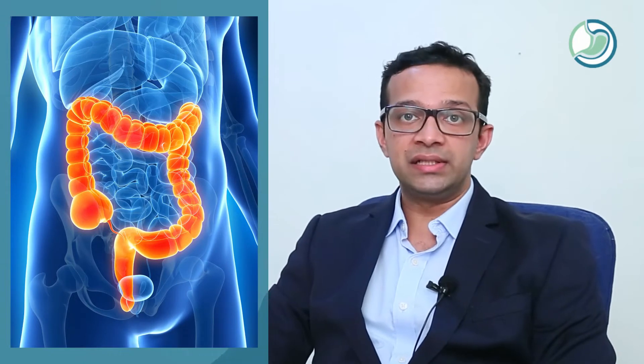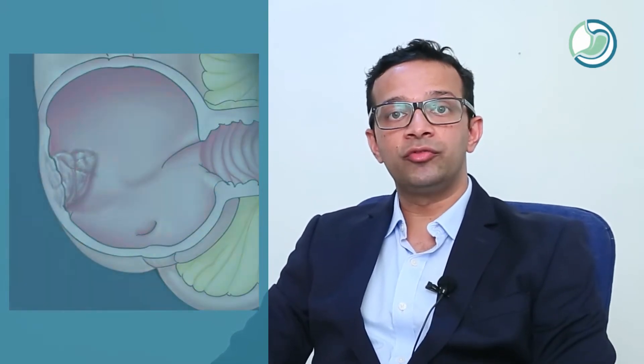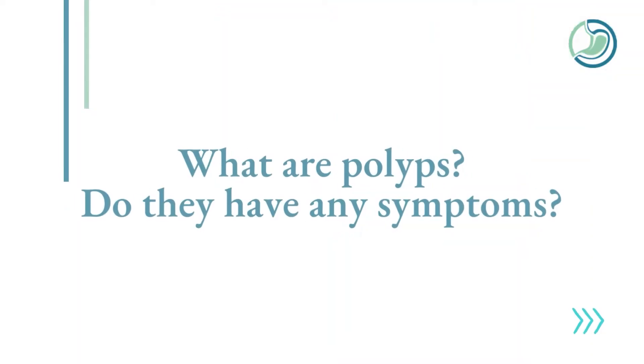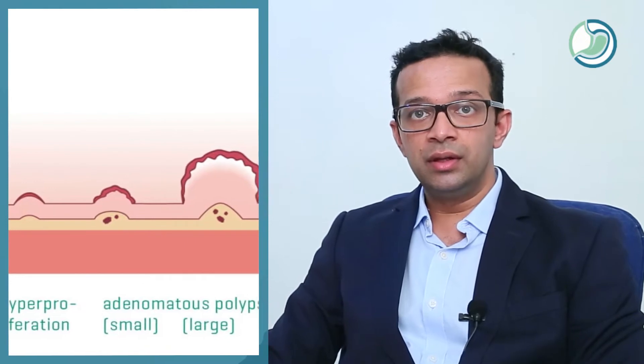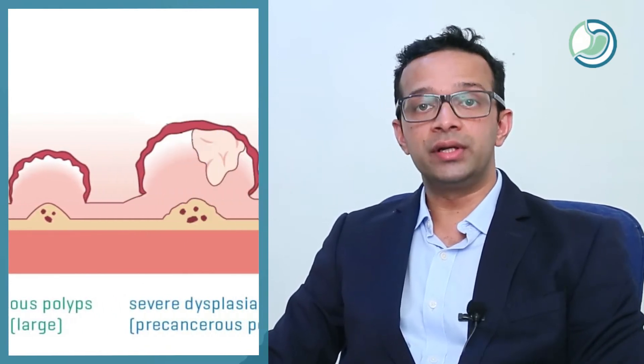Colon and rectal cancers arise from the innermost lining of the part of the large intestine. It's important to note that all of these cancers begin as polyps, which are small growths which arise in the lining of the colon and the rectum due to uncontrolled multiplication of the cells. The problem however is that when these polyps are small, they do not cause any symptoms to the patient. Therefore most of the times they are not detected.